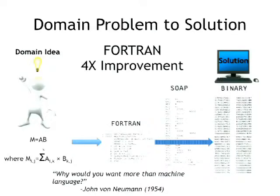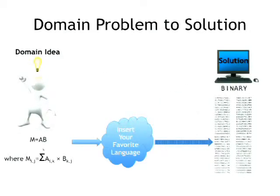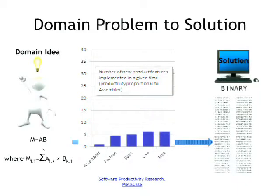The first language to come along was FORTRAN, which represented a 4x improvement in productivity over assembly language. But it wasn't universally received as a great thing. In fact, Von Neumann — famous for the Von Neumann architecture — really didn't see why you'd want any other language than machine language. He was furious at somebody who was actually wasting computer cycles by implementing an assembler.